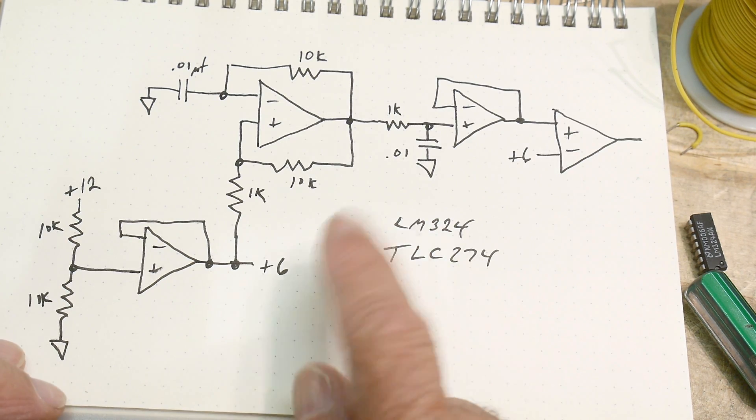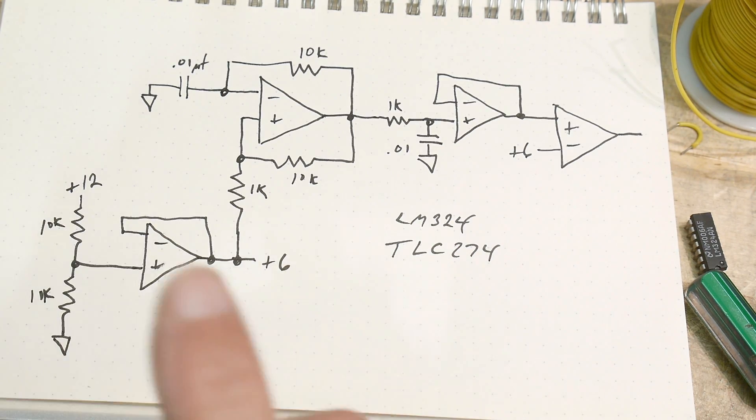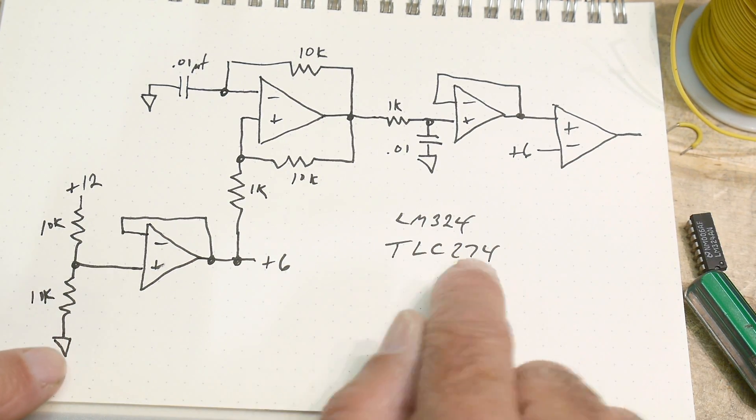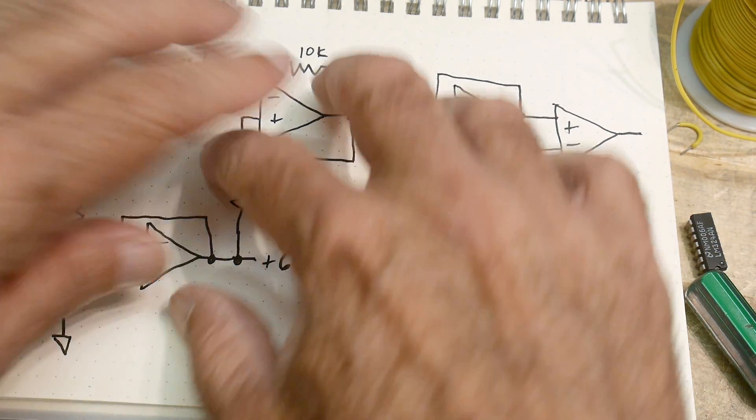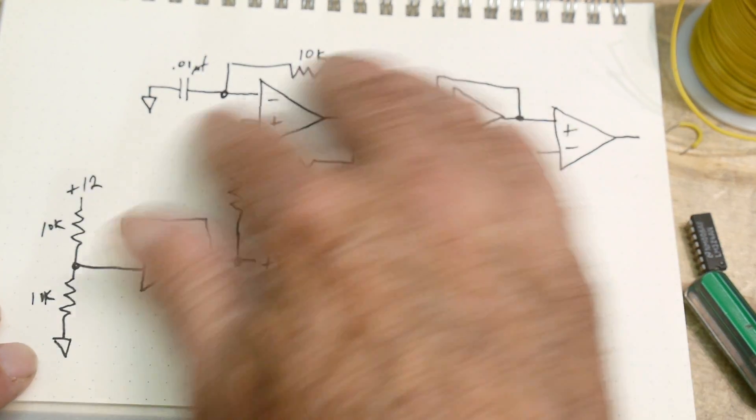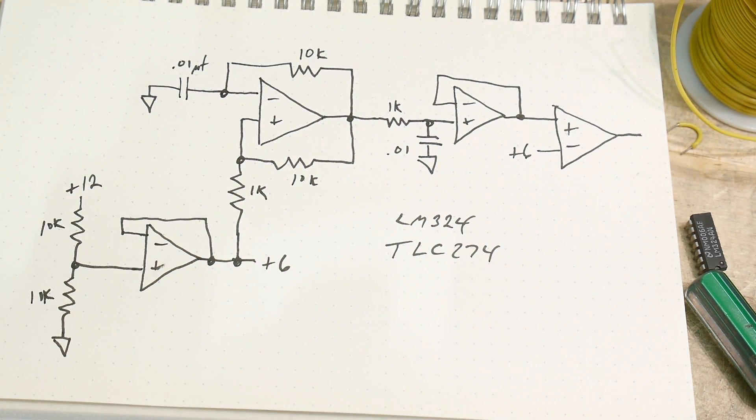The 274 is kind of a drop-in replacement for the LM. This can do single-ended as well, but it's a more modern part, a CMOS part, and it's faster probably. So I'm going to first show you the circuit with the TLC274 and then we'll see how the LM324 operates in the same circuit.